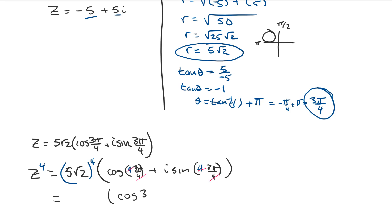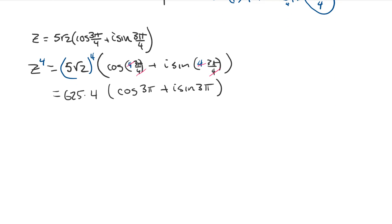We're going to get cosine of 3 pi plus i sine of 3 pi. That's 5 root 2. Okay, 5 root 2 raised to the fourth power is, so 5 to the fourth I think that's 625, and then the square root of 2 to the fourth, that's times 4. So 625 times 4 is 2500.